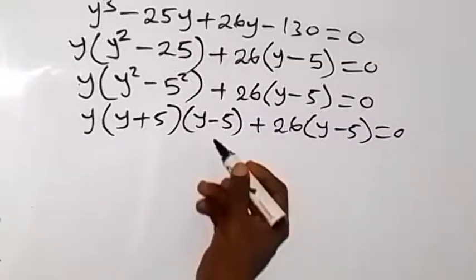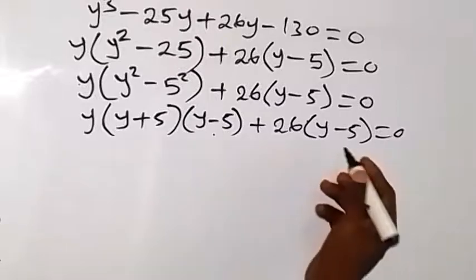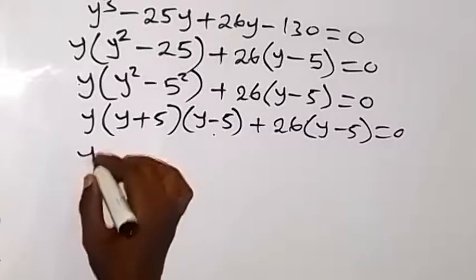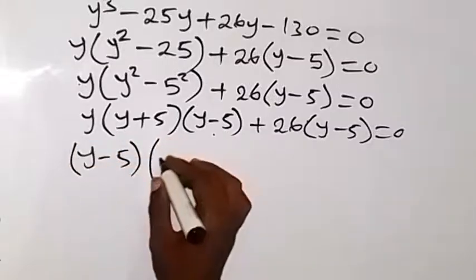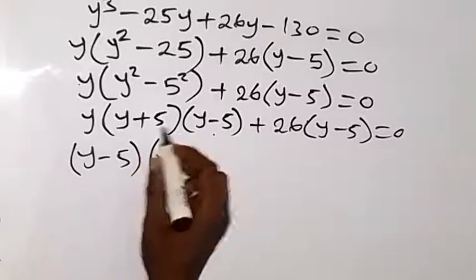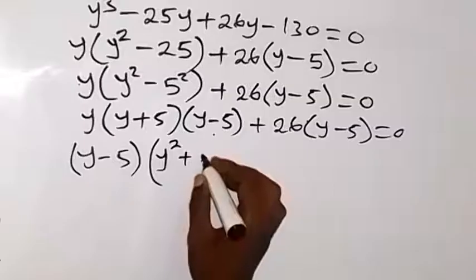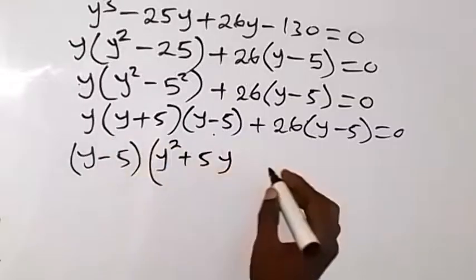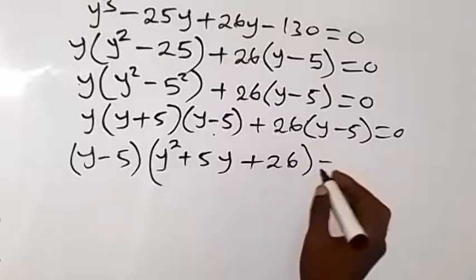Then we can see something from here that y minus 5 is common. So we can take y minus 5 out. So we are going to have y minus 5 out. Then what is left is y times y plus 5 which I can write it as y squared plus 5y when this multiplies, then plus 26 left here. Then equals to 0.